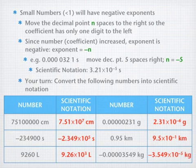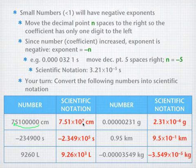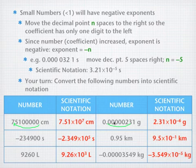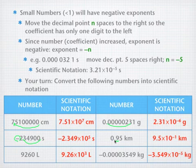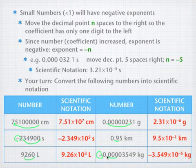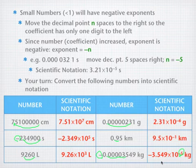Here are the answers. For the large number, we move the decimal point 7 digits to the left, so we have 7.51 times 10 to the 7th centimeters. For the small number we move to the right 6 decimal places, giving 2.31 times 10 to the minus 6 grams. Moving 5 spots to the left for the large negative number gives negative 2.349 times 10 to the 5th seconds. 0.95 moves 1 to the right: 9.5 times 10 to the minus 1 kilometers. Moving 3 to the left gives 9.26 times 10 to the 3rd — keep that negative. Finally, moving 5 to the right gives negative 3.549 times 10 to the minus 5 kilograms.